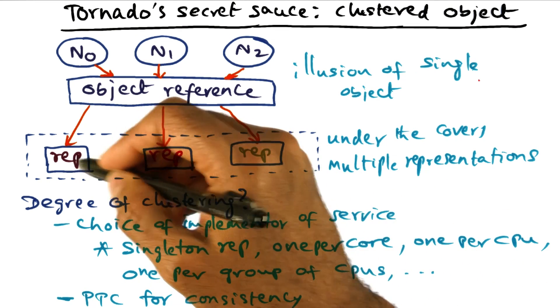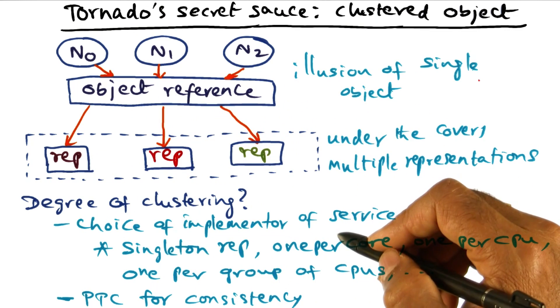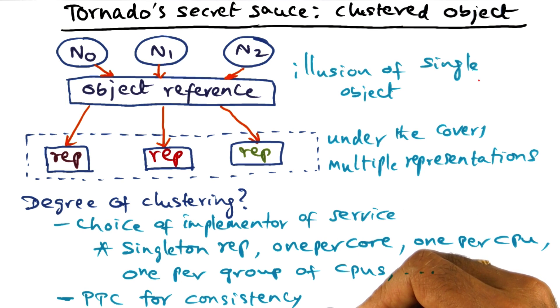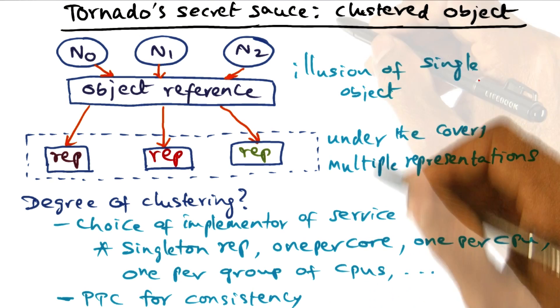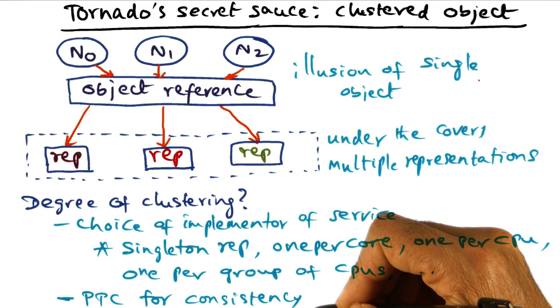And of course, if we are talking about replicated objects, you have to worry about the consistency of the replicated objects. This is where the suggestion in the Tornado system is to maintain the consistency of the objects through protected procedure call that is implemented under the covers in the operating system.